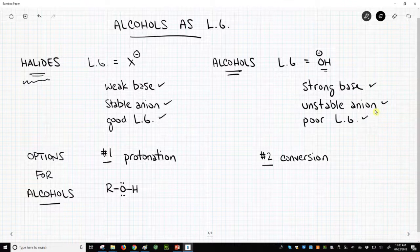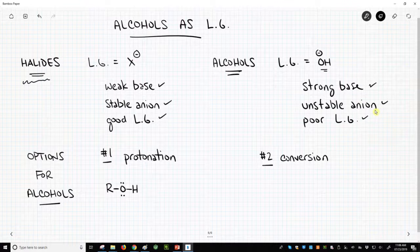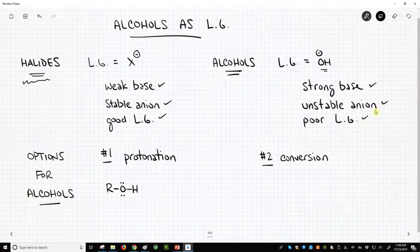So all this chemistry – SN1, SN2, E1, E2 – it all hinges on having a good leaving group. And yet alcohols, that OH group, is a terrible leaving group. So how do we get around this problem? Because if we're going to talk about the chemistry, we need to fix this issue.